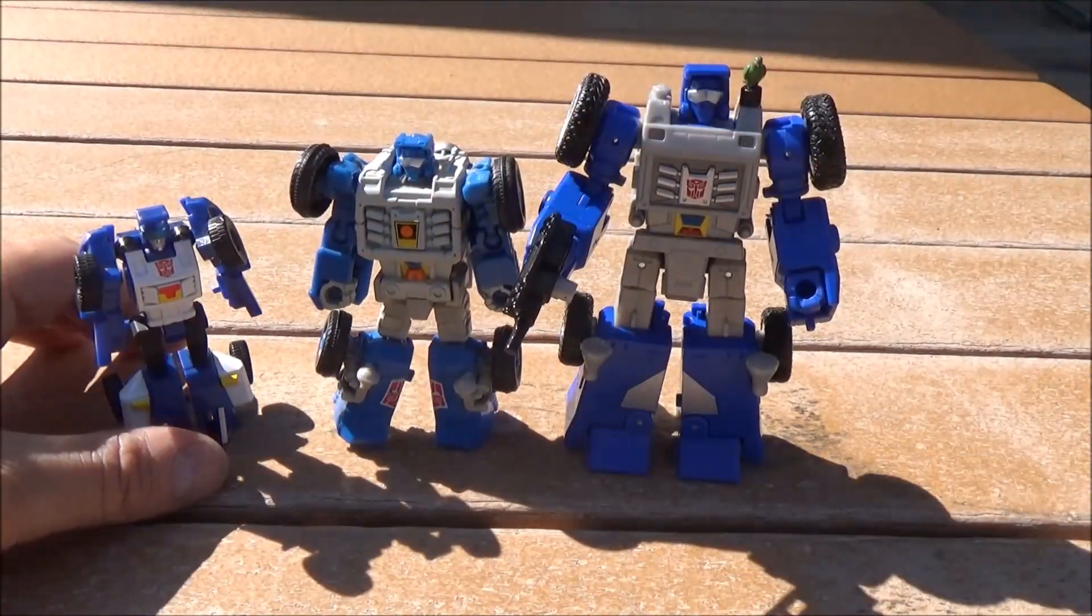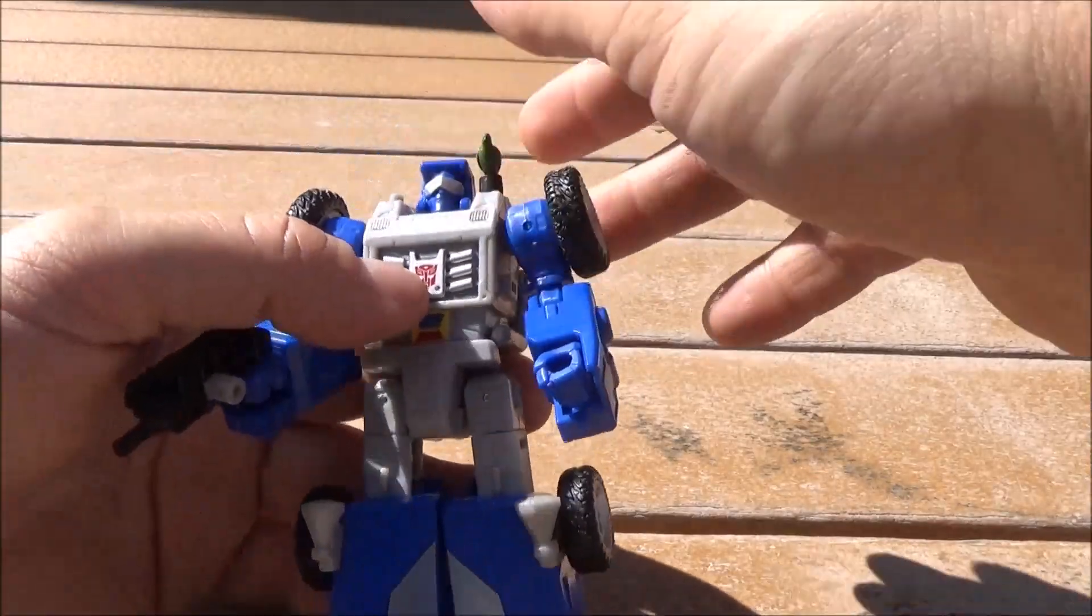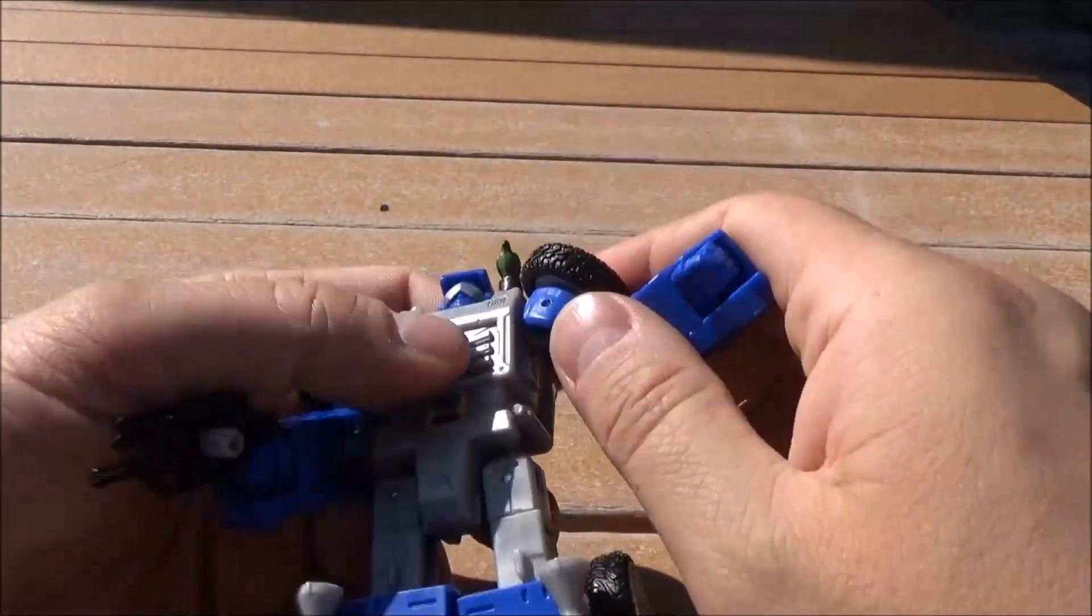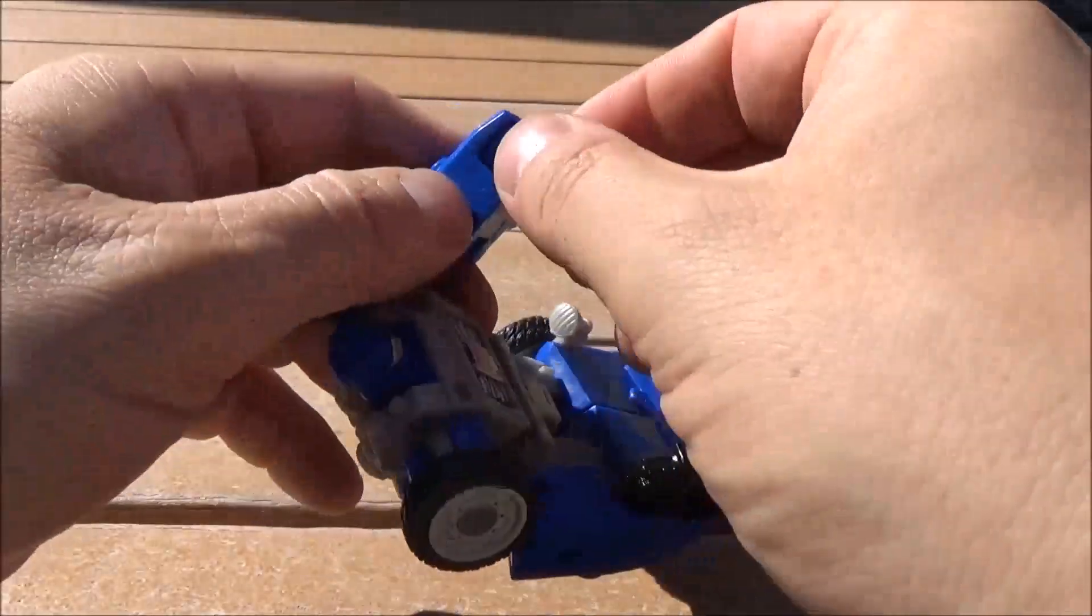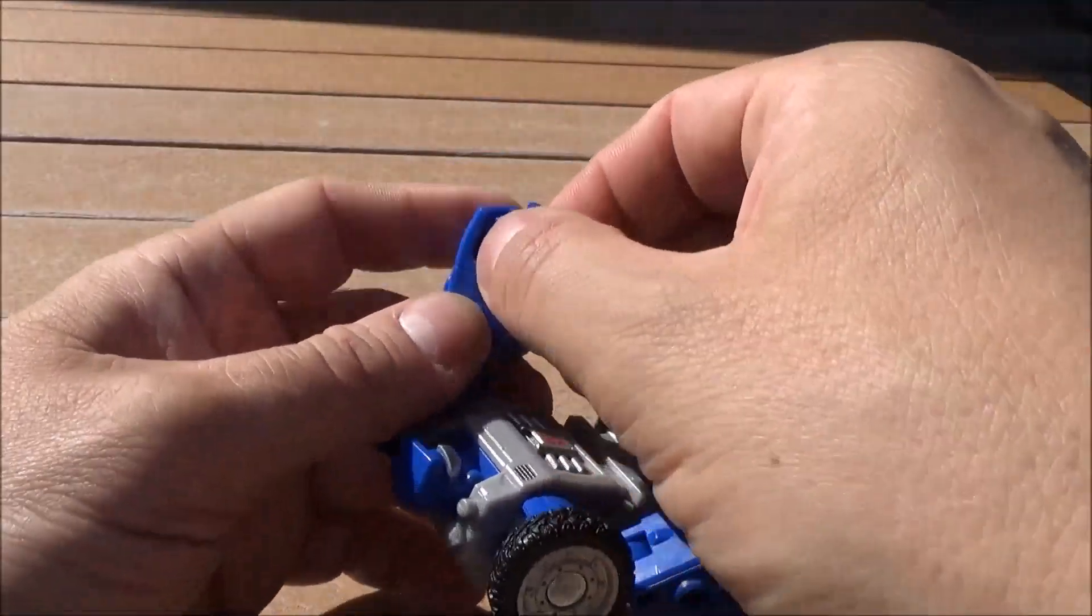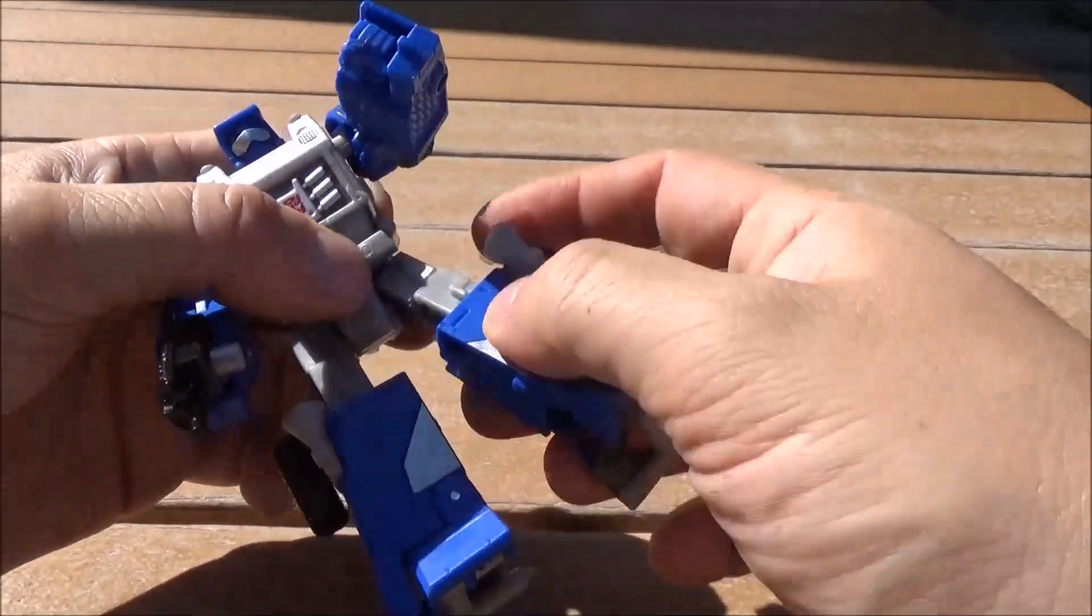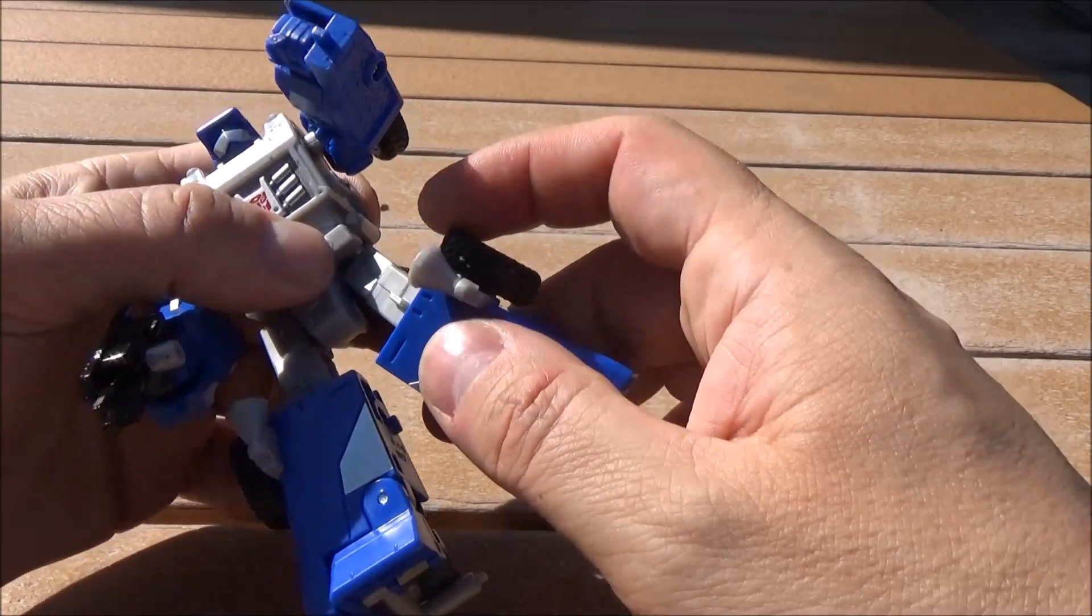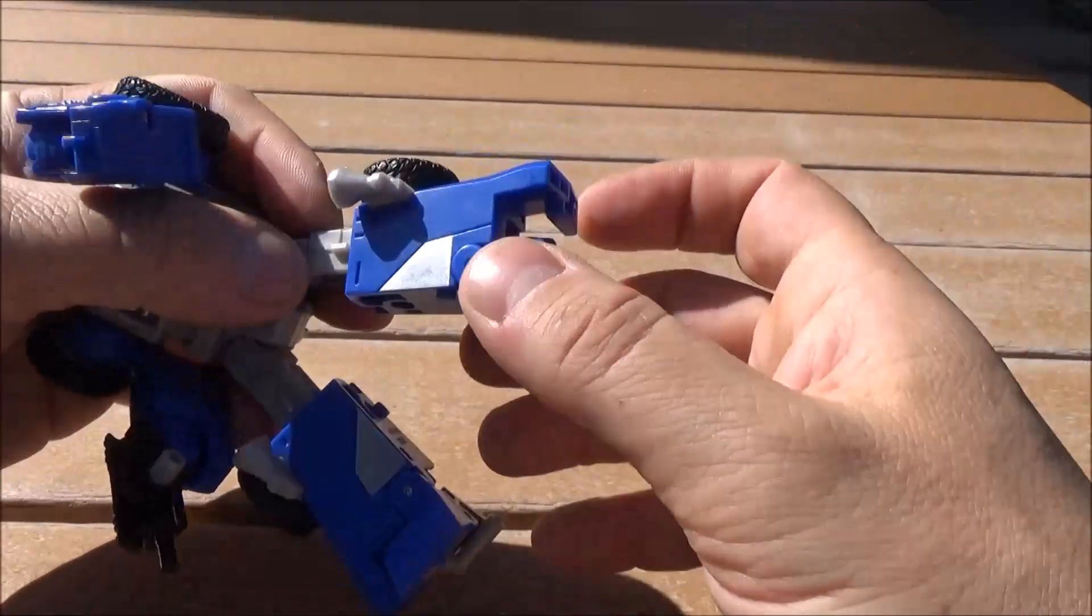Articulation: head is on a ball joint but is limited due to the way the head is made. Universal joint for the shoulder, universal joint for the elbow. There is wrist rotation, but it is somewhat limited because of the design. Waist rotation, universal joint for the thigh, mushroom peg and 90-degree bend, as well as ankle tilt.